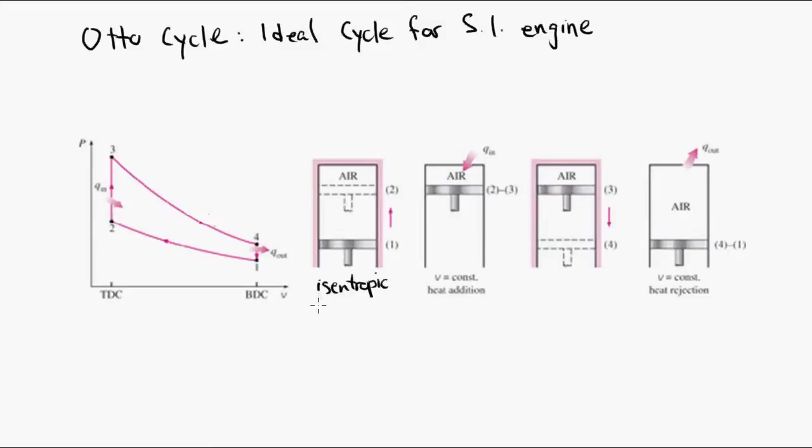The four stages of the Otto cycle consist of isentropic compression, constant entropy as the piston moves up and compresses the air in the cylinder. The second stage is heat input. We consider it constant volume heat input, or QN, that represents the combustion stage.